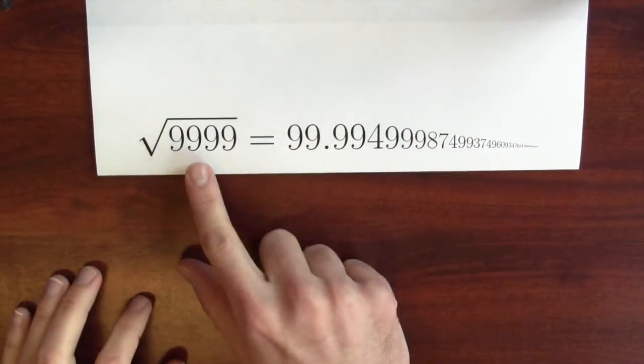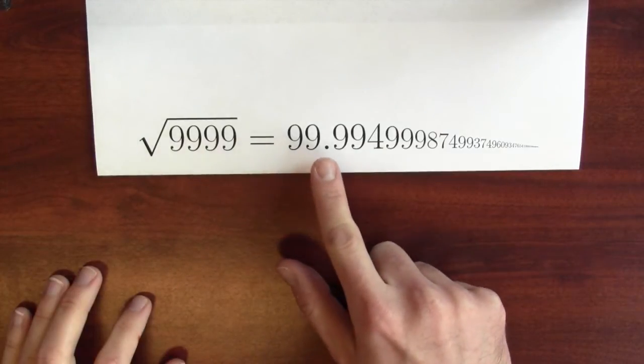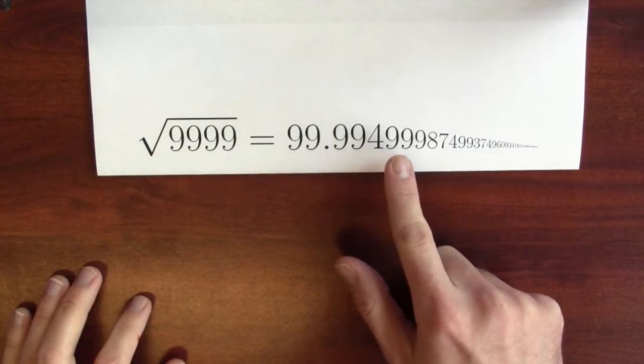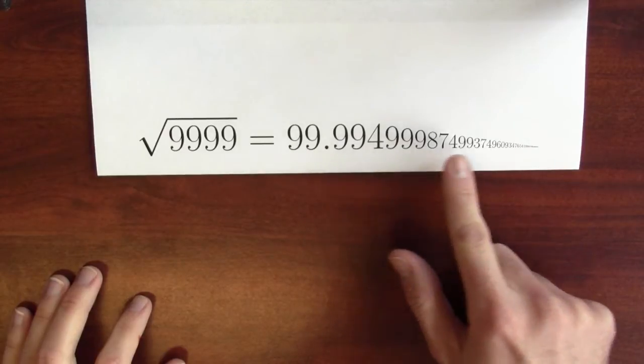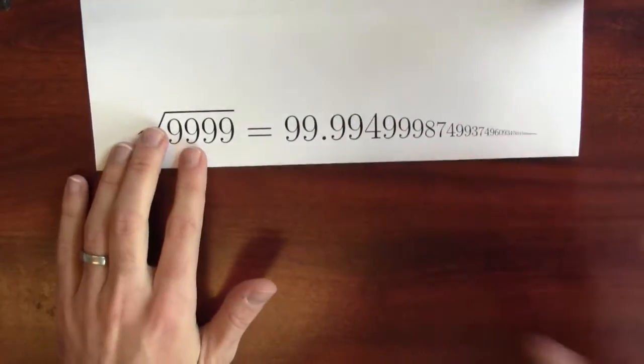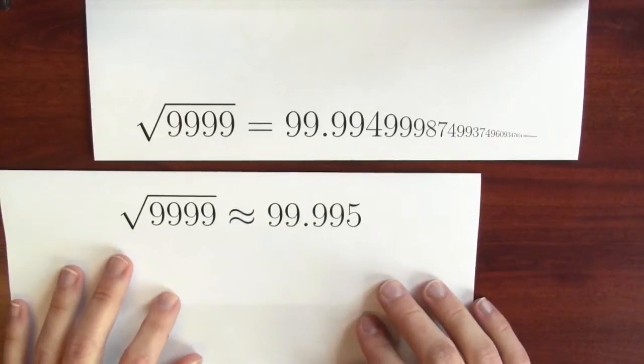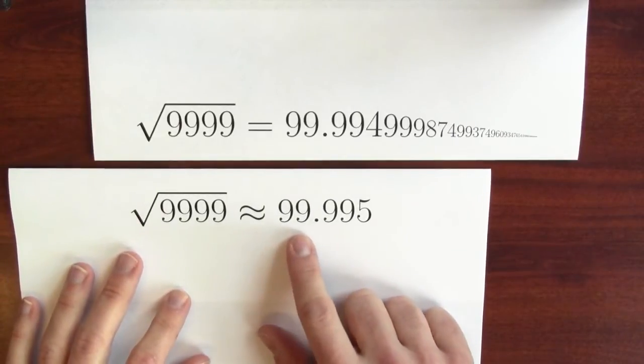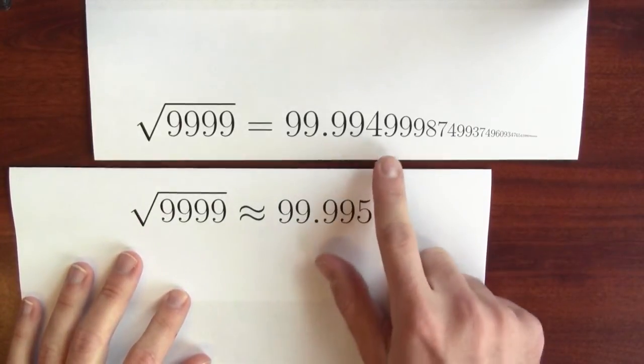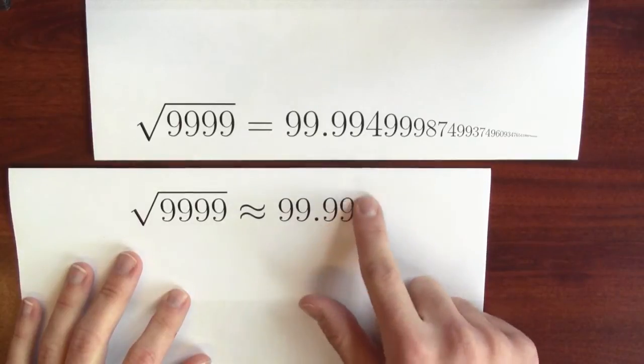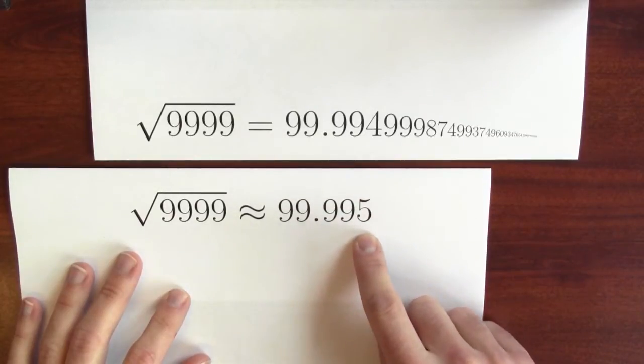Look, the square root of 9999 is 99.9949998. It keeps on going forever. It's irrational. But this is bizarrely close to 99.99 instead of 499, just saying it's close to 99.995. Is this just a coincidence?